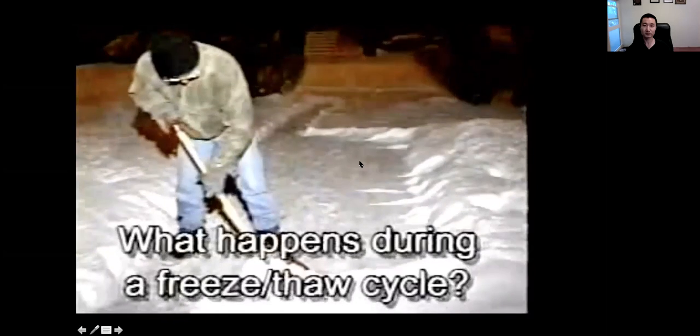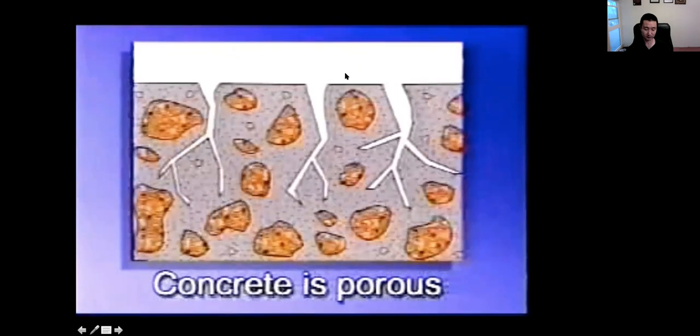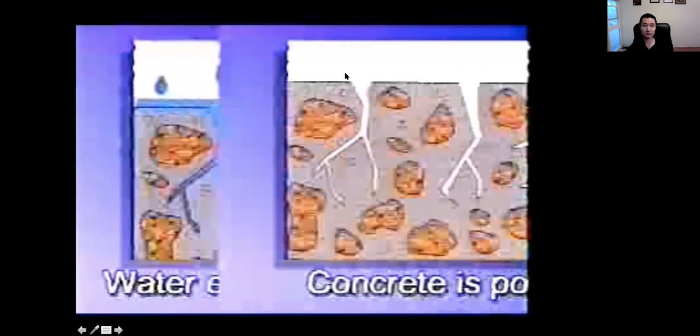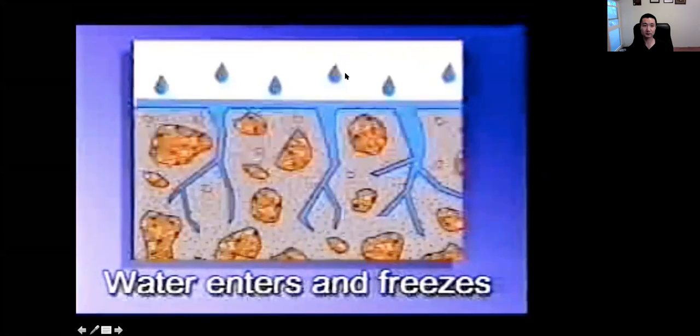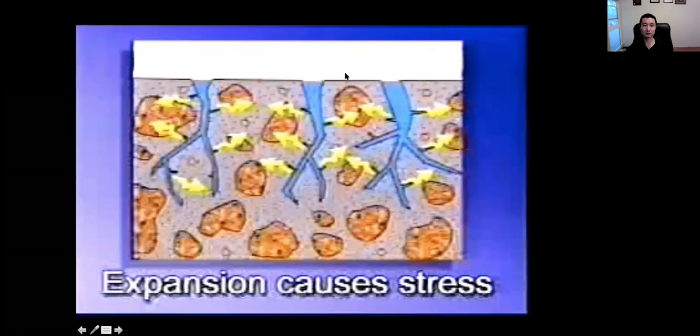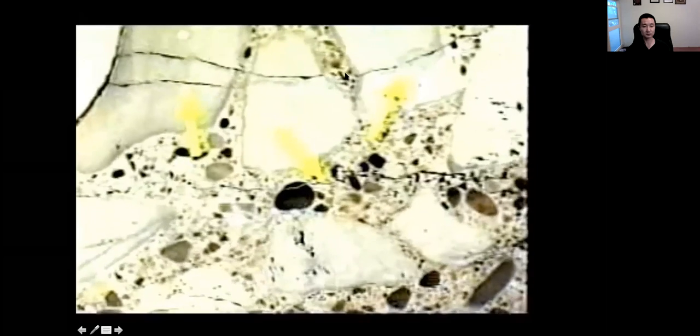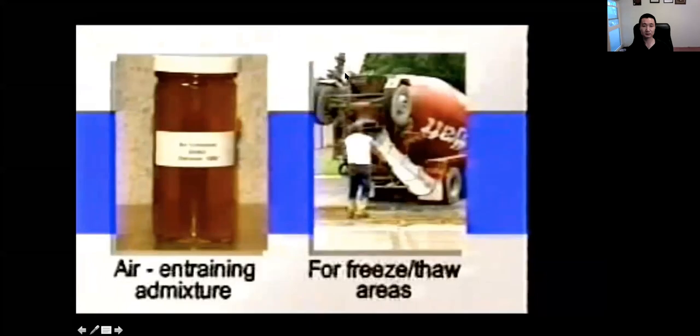Concrete in cold, wet climates undergoes many freeze-thaw cycles during the fall, winter, and spring. During a freeze-thaw cycle, no matter how low the water-cement ratio, concrete is somewhat porous. Water is able to enter the spaces and freeze. When water freezes, it expands. When there is no room for this expansion, stresses develop inside the concrete. The concrete relieves these stresses by cracking. Over many freeze-thaw cycles, these stress cracks appear as surface cracks or scaling. For quality concrete in freeze-thaw areas, an air-entraining admixture should be added to the mix.